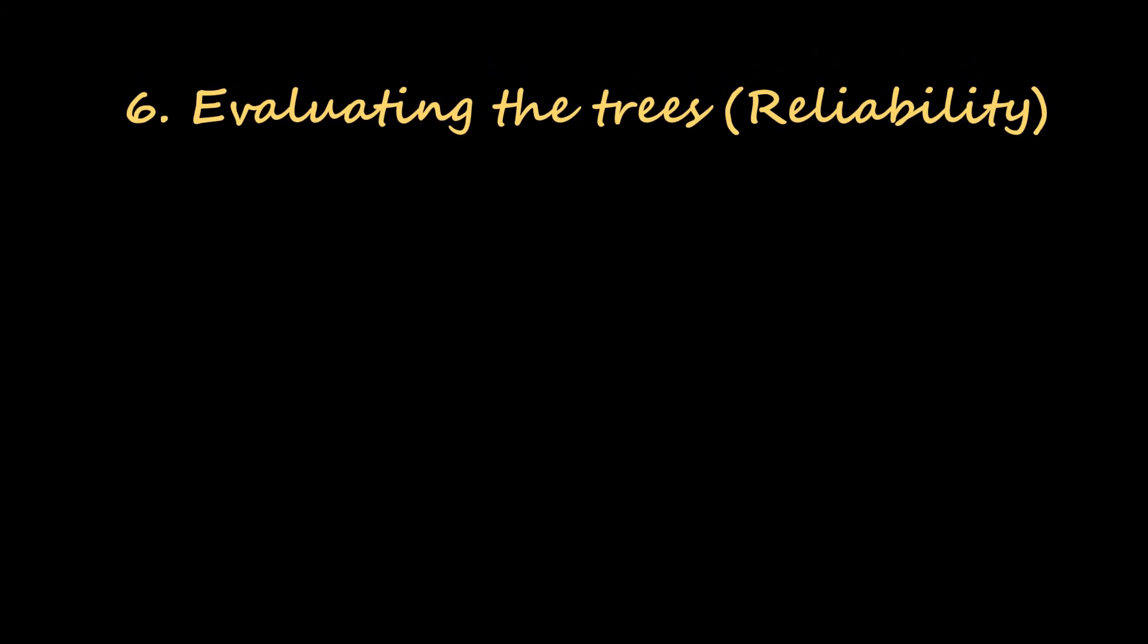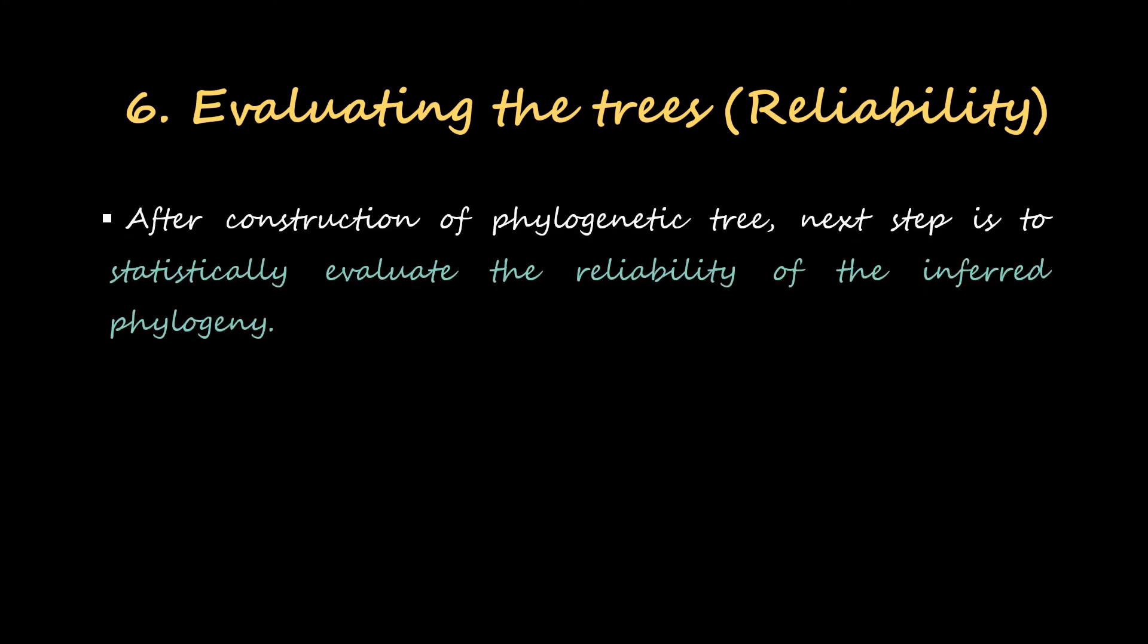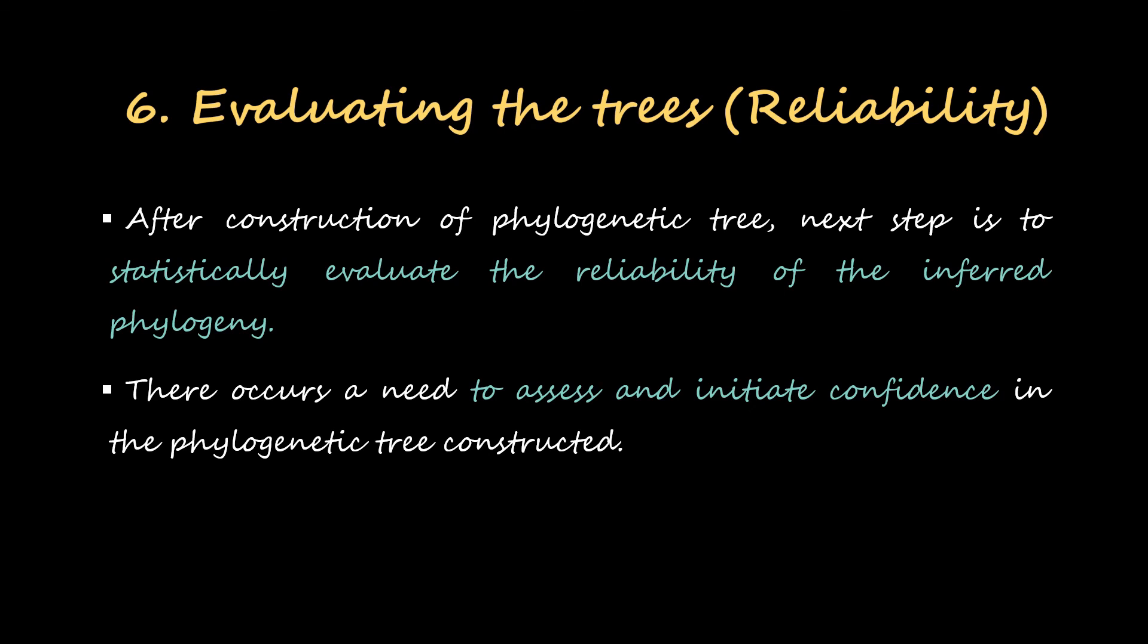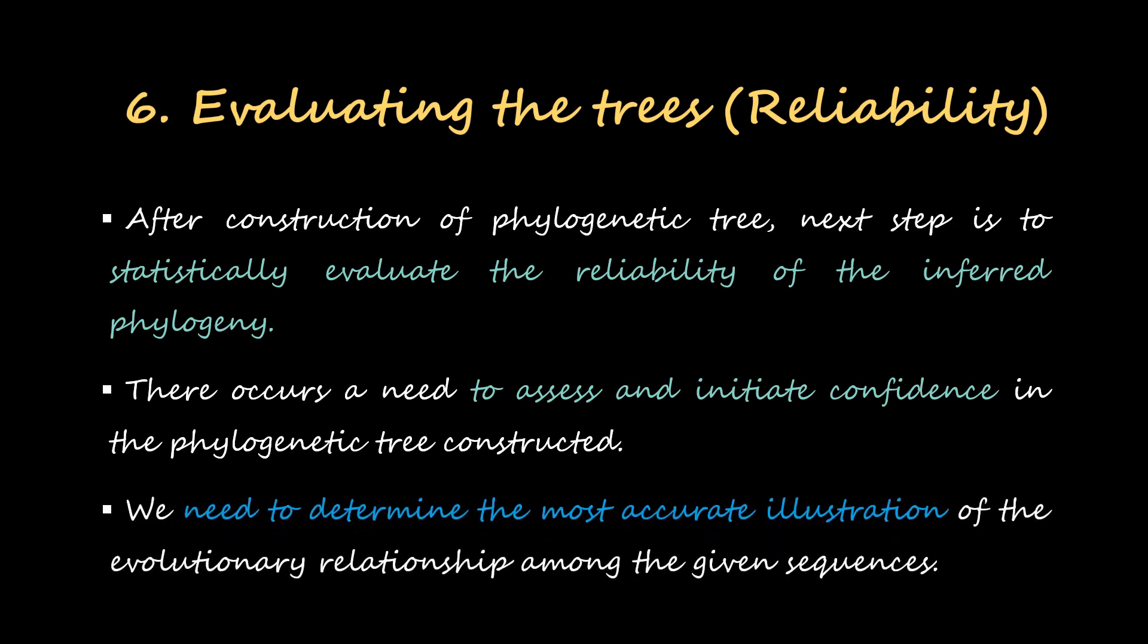Sixth is evaluating the trees—that is reliability. After construction of phylogenetic tree, the next step is to statistically evaluate the reliability of the inferred phylogeny. There occurs a need to assess and initiate confidence in the phylogenetic tree constructed. We need to determine the most accurate illustration of the evolutionary relationship among the given sequences.